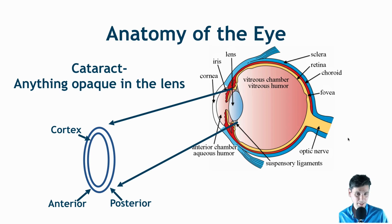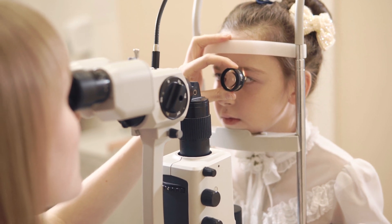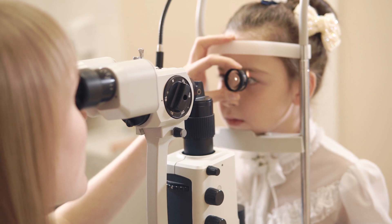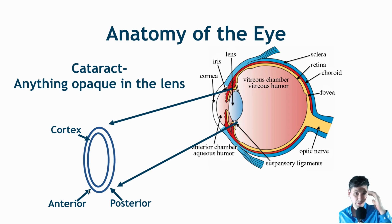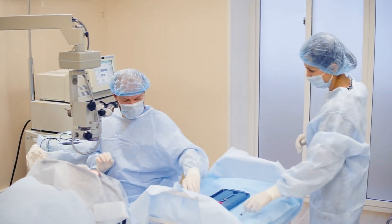We're not going to talk about image formation or how your brain interprets that. What we're going to talk about is just the lens itself — where the light is passing through. If there's anything opaque inside that lens, it's going to cause a problem and increase difficulty in the vision system. The cortex is the outside of the lens, the anterior is where the light is coming in, and the posterior is behind.